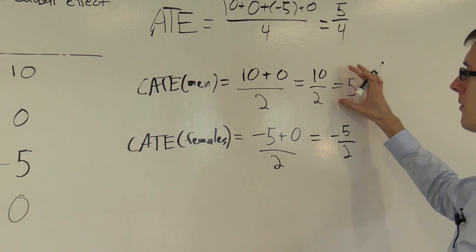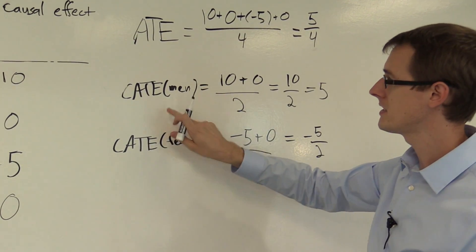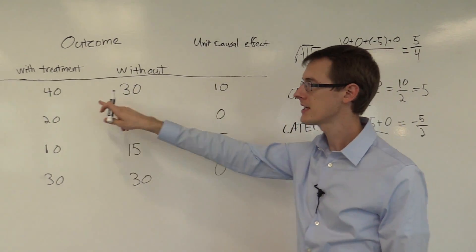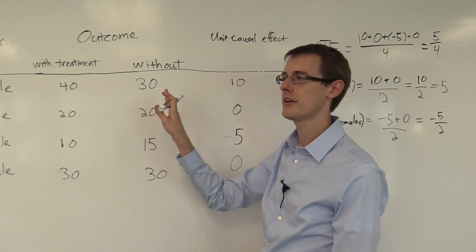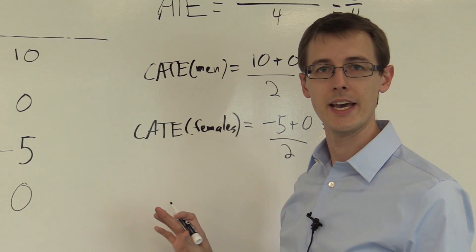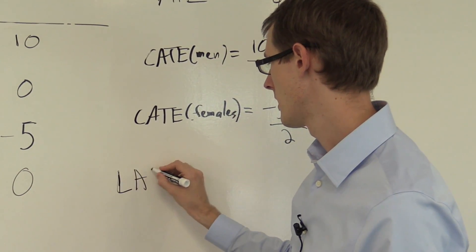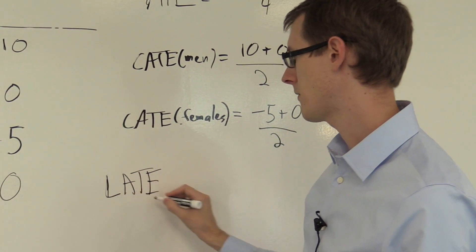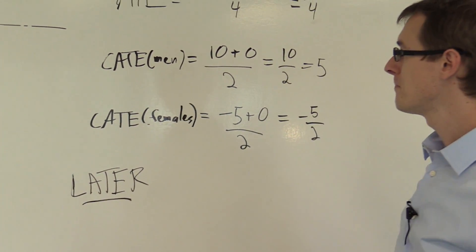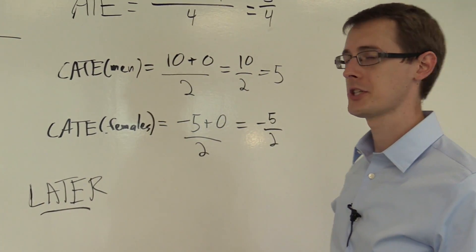When we go to real data, later on in these modules, we'll see how to learn these numbers from real data. Here I computed them by assuming I knew both columns, but we're not going to know both columns — so how do we learn these numbers? There are also other kinds of averages we'll talk about later, for example something called LATE, the local average treatment effect. So those are average treatment effects and conditional average treatment effects.